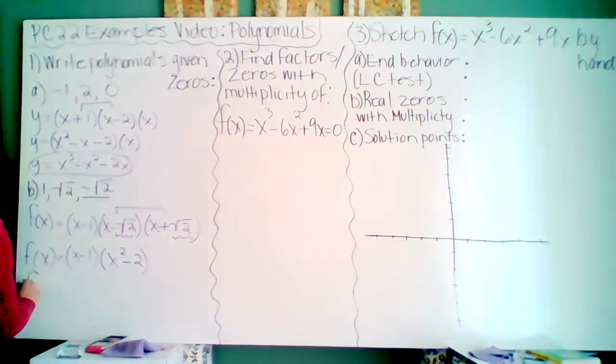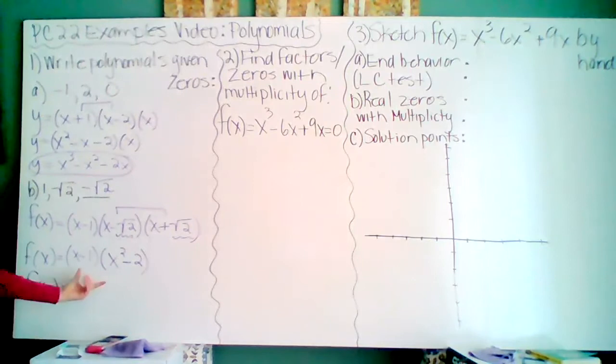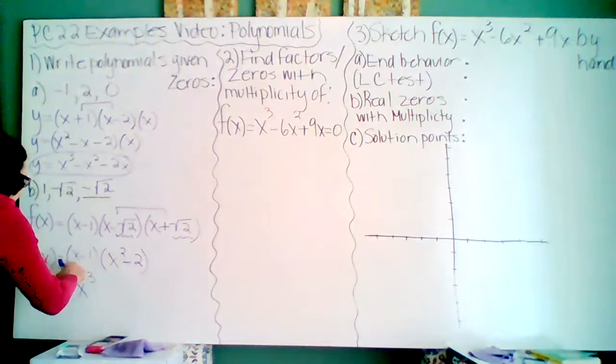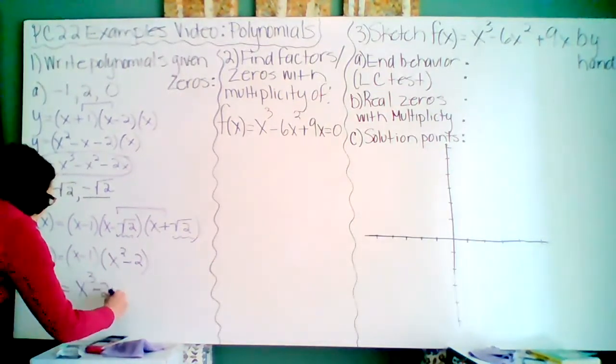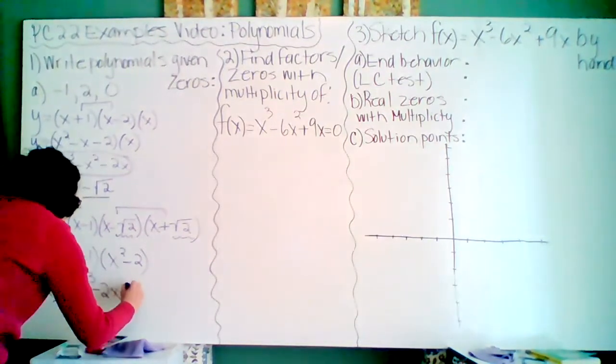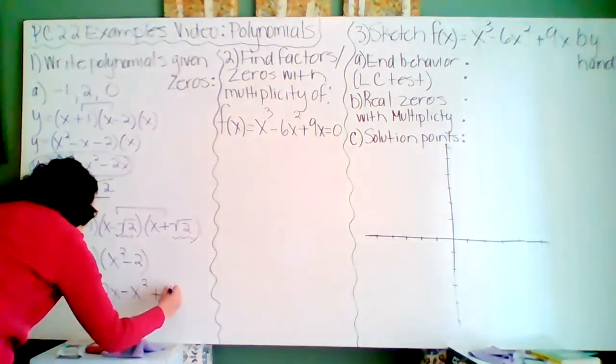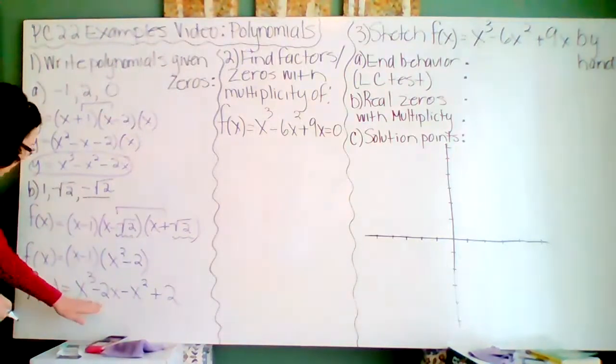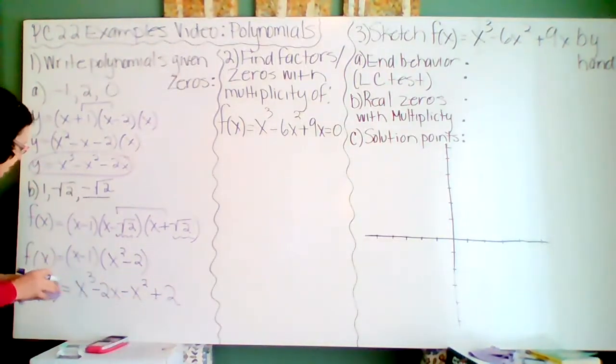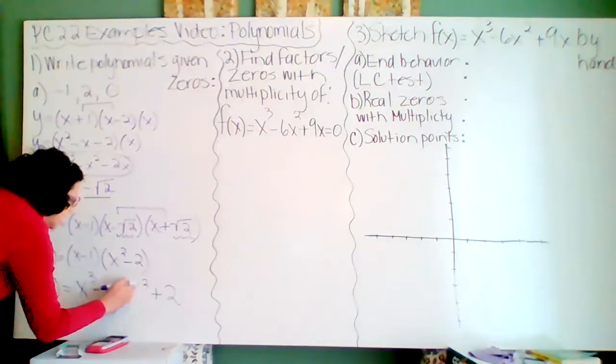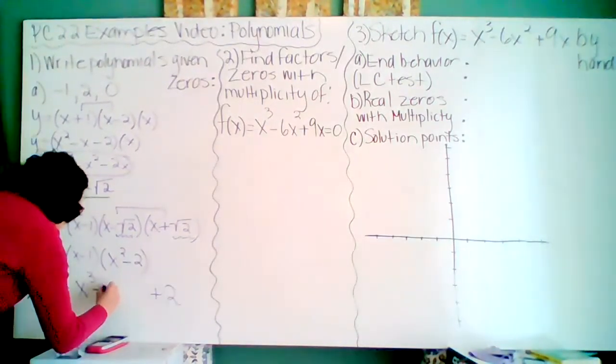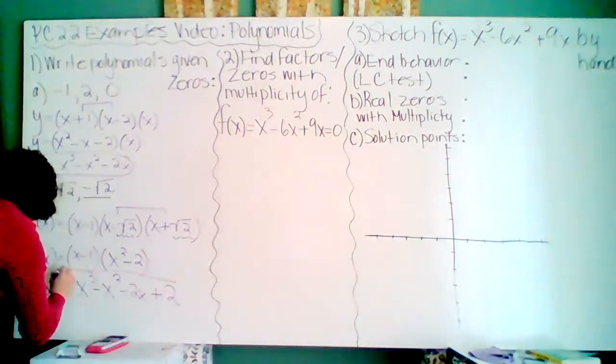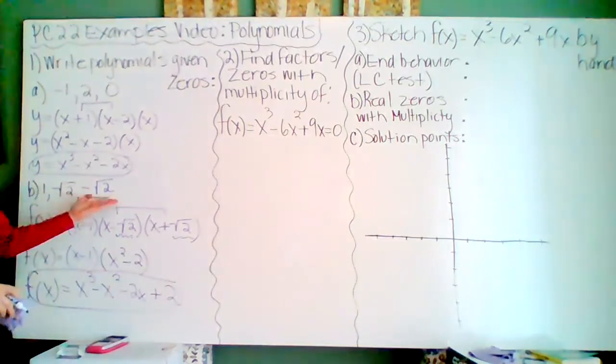All right, last. First outer inner last of the two binomials here. This would be an x cubed. On the outside, I have minus 2x. On the inside, I have minus x squared. And last, I have plus 2. Now, to put it in standard order, though, I would have my minus x squared before my minus 2x. Just for standard form. Here we go. This is a polynomial with these zeros.